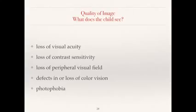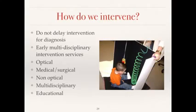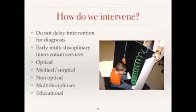There may be loss of visual acuity, loss of contrast sensitivity, and loss of peripheral visual field. There may be defects in or loss of color vision and photophobia. How do we intervene? We should not delay intervention for diagnosis. There are early multidisciplinary intervention services. There may be optical interventions, medical and surgical, non-optical, and other educational interventions. This is a team approach.